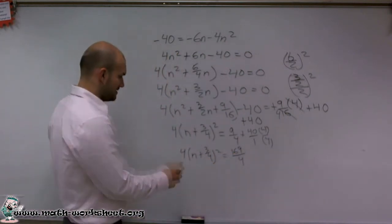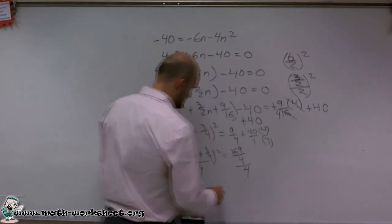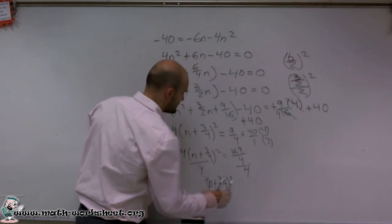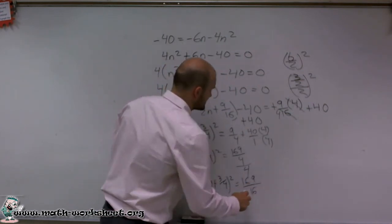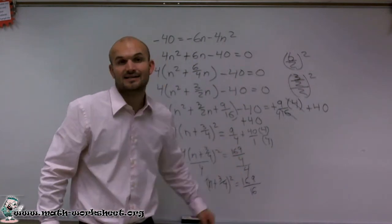Now again, I'm going to divide by 4 on both sides. And then I finally get n plus 3 fourths squared equals 169 divided by 16, as 169 divided by 4 divided by 4 is 169 divided by 16.